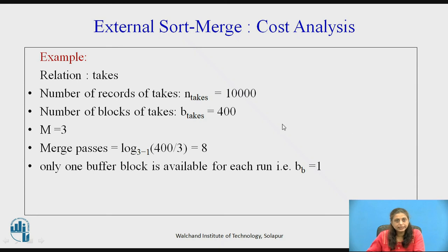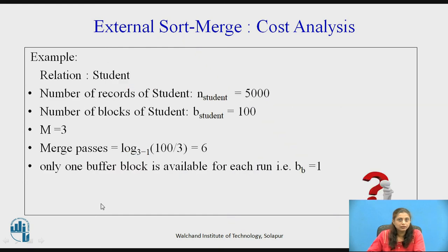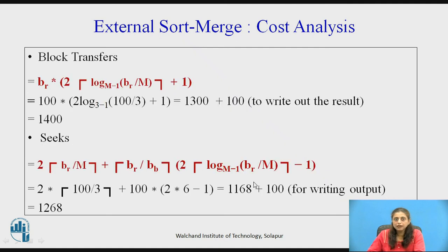Consider the example of the instructor relation with 10,000 records and 400 blocks with M = 3. The number of passes required is ⌈log_2(400 / 3)⌉ which equals 8. Assuming B_b = 1, the total block transfers are 400 × (2 × 8 + 1) = 6,800 + 400 = 7,200, and the seek operations are 6,668. For the student relation, the number of passes is 6, giving 1,400 block transfers and 1,268 seek operations.